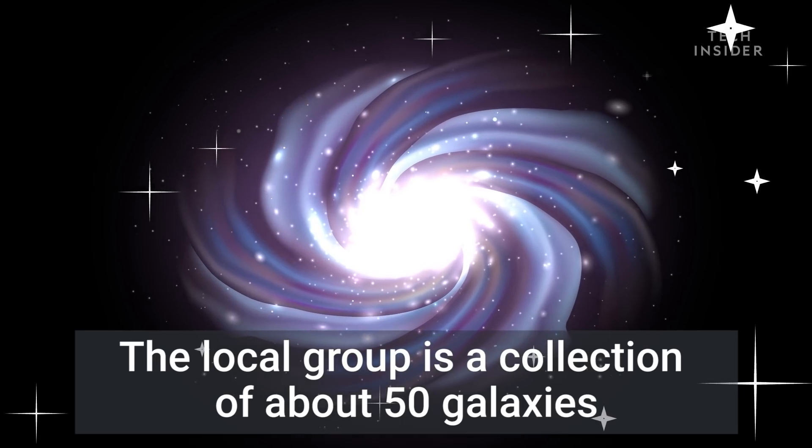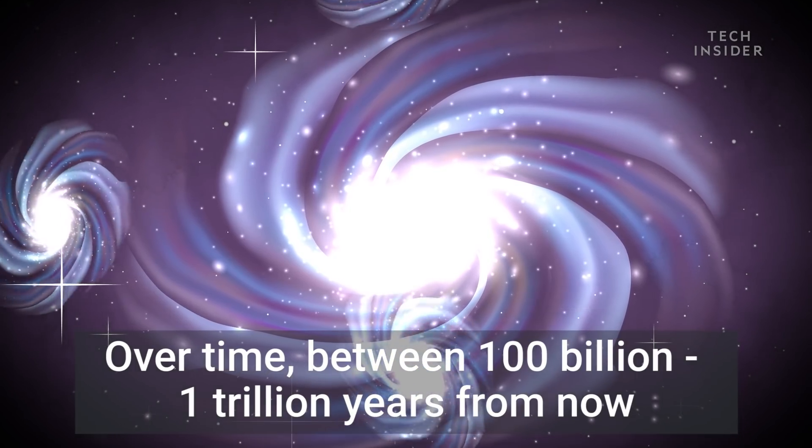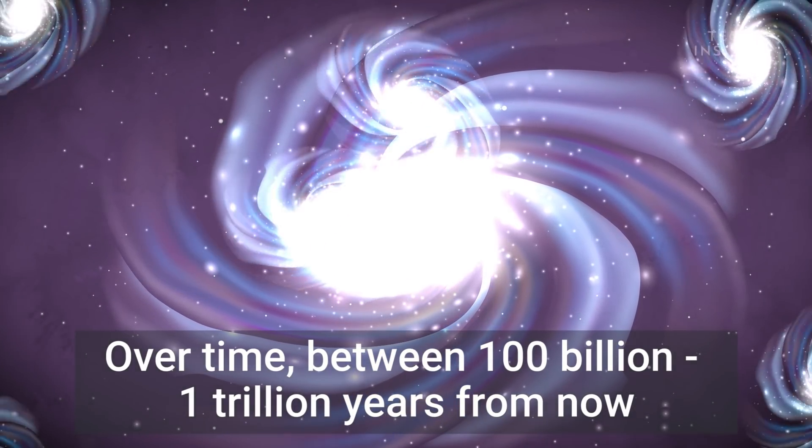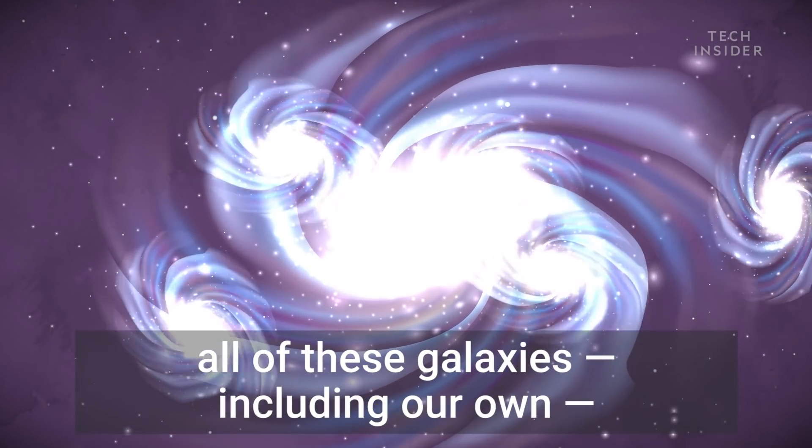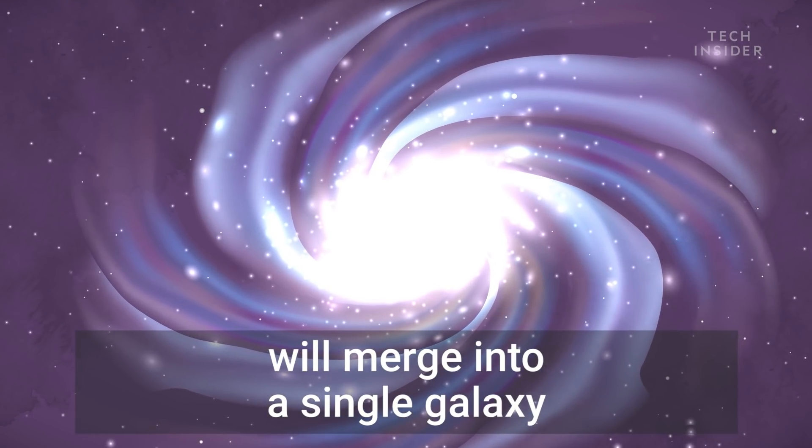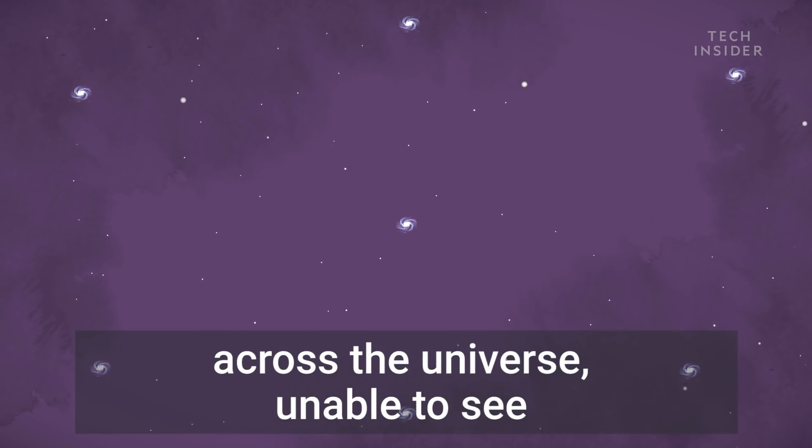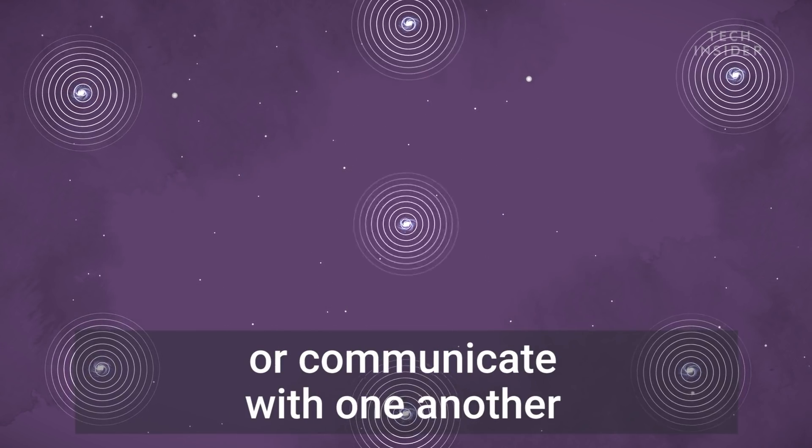The local group is a collection of about 50 galaxies which are bound to each other by gravity. Over time, between 100 billion to 1 trillion years from now, all of these galaxies, including our own, will merge into a single galaxy. It will be just one of billions of galaxies across the universe, unable to see or communicate with one another.